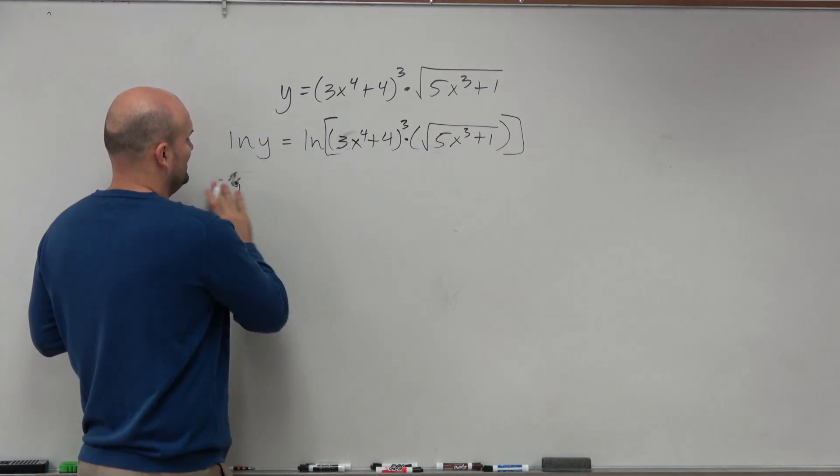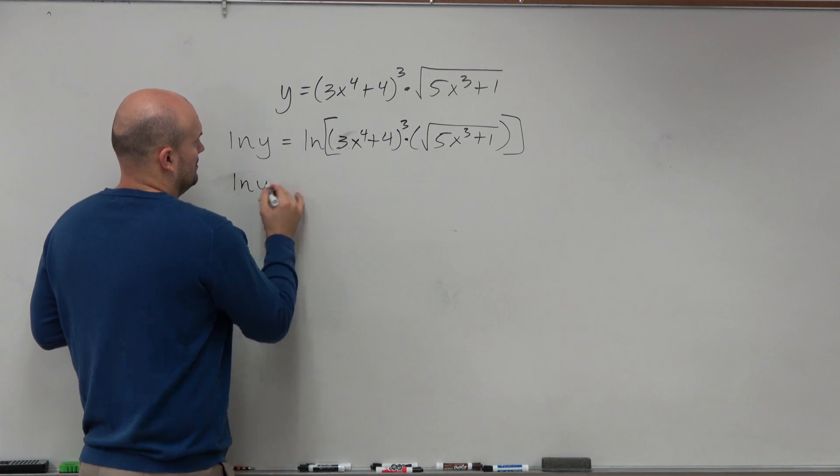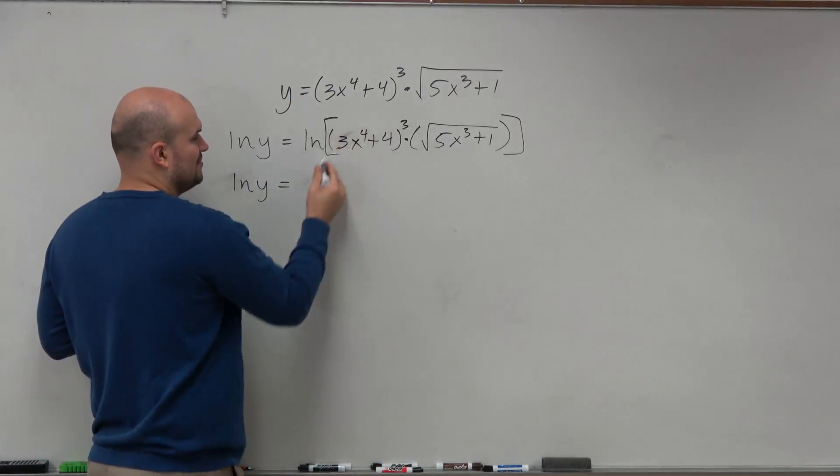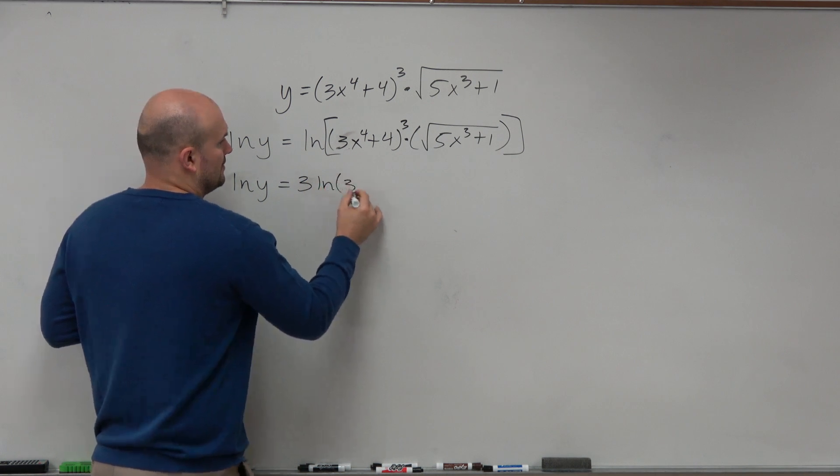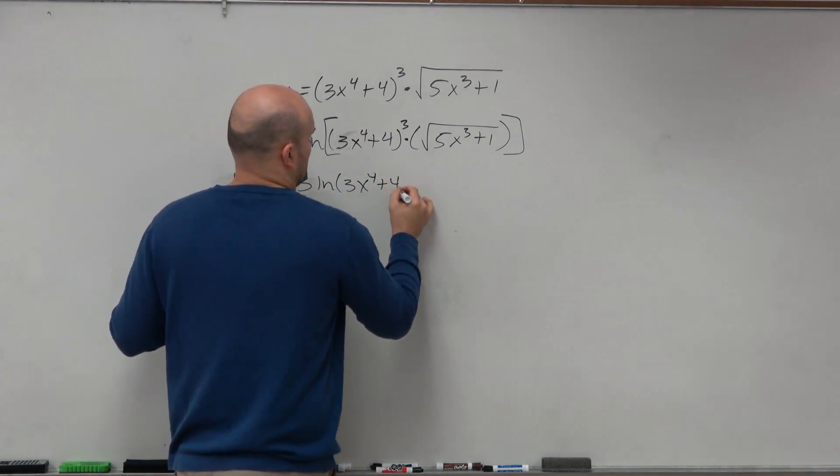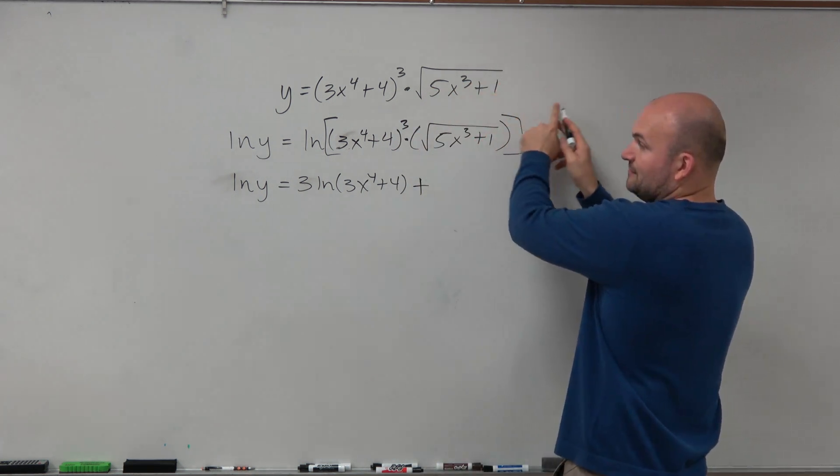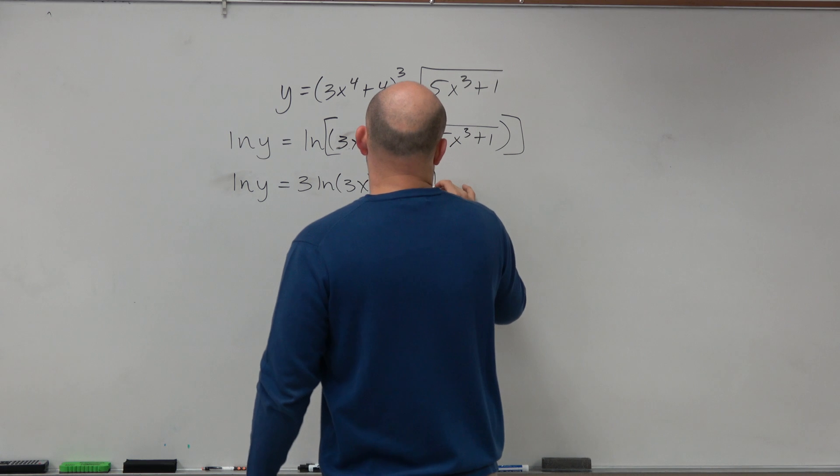So to save myself a little bit of time, I'm just going to go ahead and take the 3, bring it in front. Plus, I'm going to take the square root, put it as a 1 half, so therefore I know I can throw it in front as well.